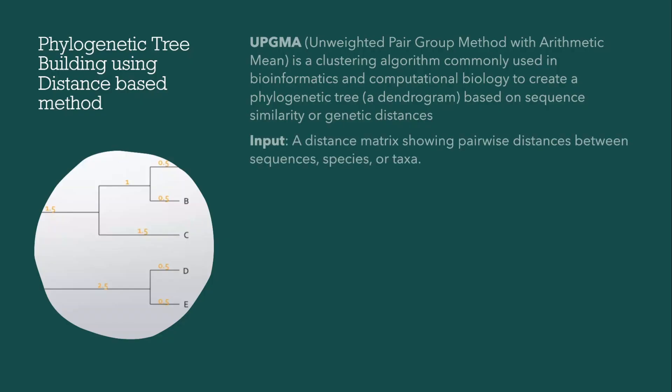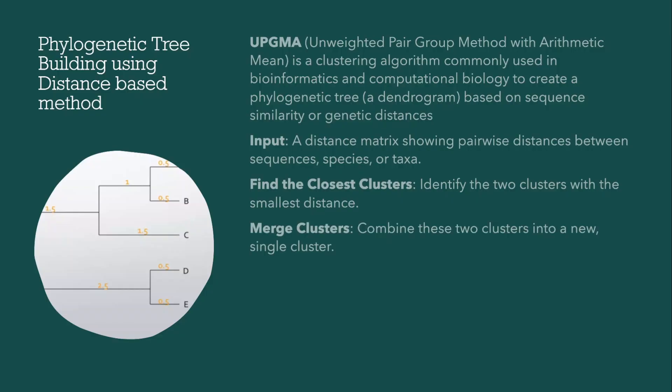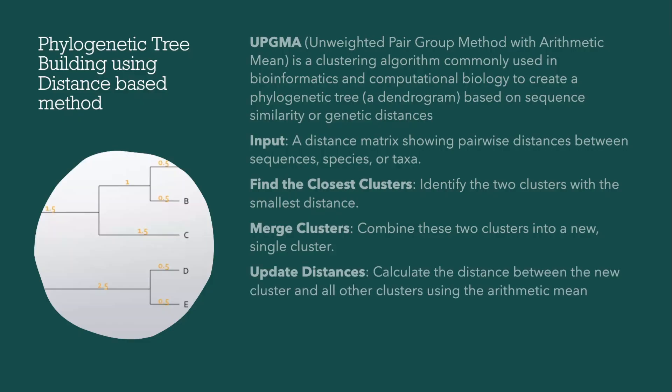For input, we have a distance matrix showing pairwise distances between sequences, species, or taxa. Our first step is to find the closest clusters — we group two sequences which have the smallest distance between them, then build a new distance matrix with those two sequences merged as a cluster. We keep doing this until all sequences are grouped into a phylogenetic tree.